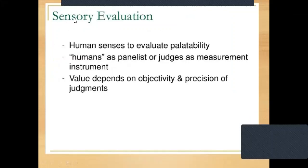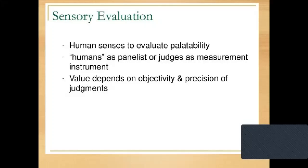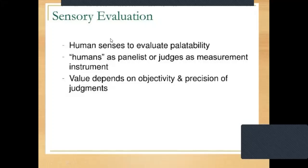Next, we study about sensory evaluation. Sensory evaluation is basically based on human senses — various types of human senses present in our body, also called organoleptic senses. These senses are used after consumption of food material. We use five types of senses: eyes, nose, mouth, teeth, and fingers or hands. We use human senses to evaluate palatability, with humans as panelists or judges as the measurement instrument. Value depends upon objectivity and appreciation of judgment.